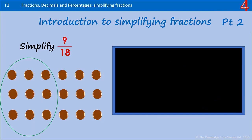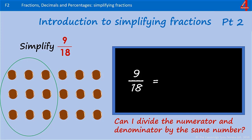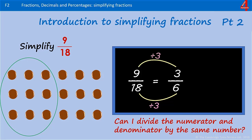Pause the video, have a go at this one. Simplify 9 eighteenths. I can divide 18 by 2, but I can't divide 9 by 2. But I do know that they're both in the 3 times table, so I can divide them both by 3. 18 divided by 3 is 6. 9 divided by 3 is 3. Can I divide the numerator and denominator again? I can divide them both by 3 again.